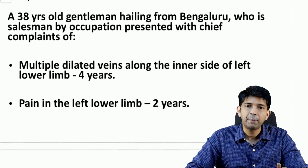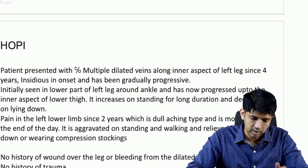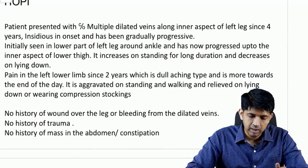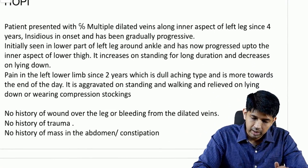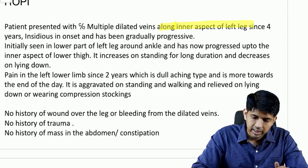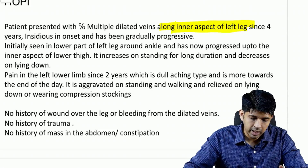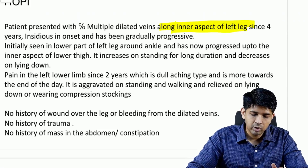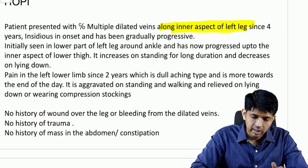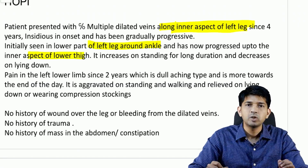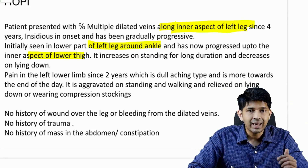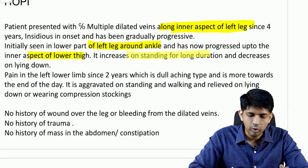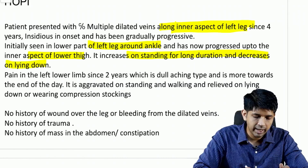The patient presented with complaints of multiple dilated veins along the inner aspect of the left leg, indicating it is the GSV territory. It was insidious in onset and gradually progressive — initially only around the ankle, and now progressed up to the lower thigh. It increases on standing for long duration and decreases on lying down.